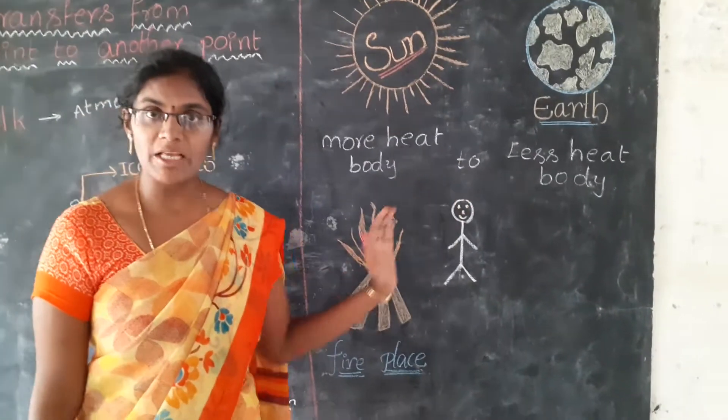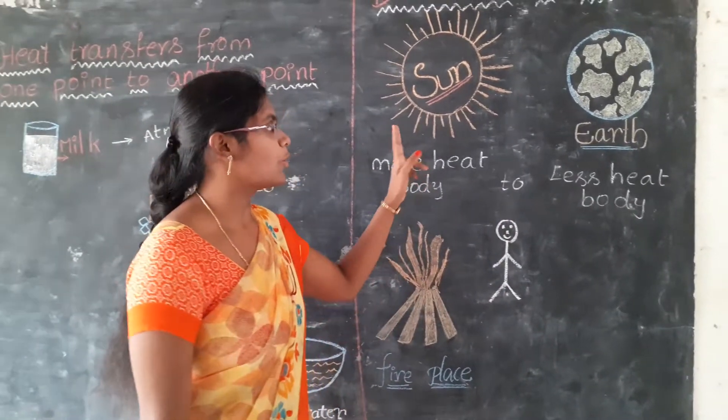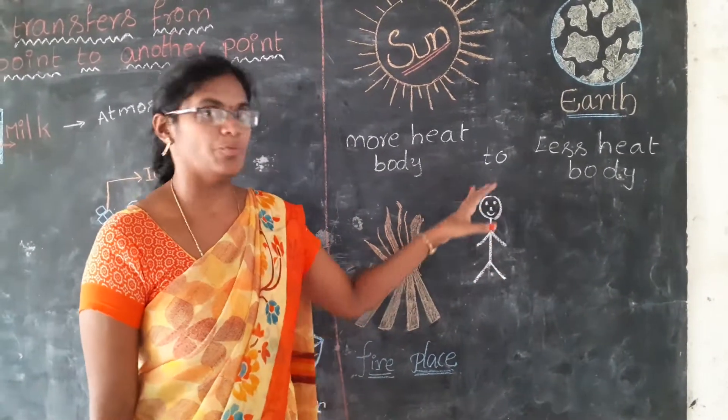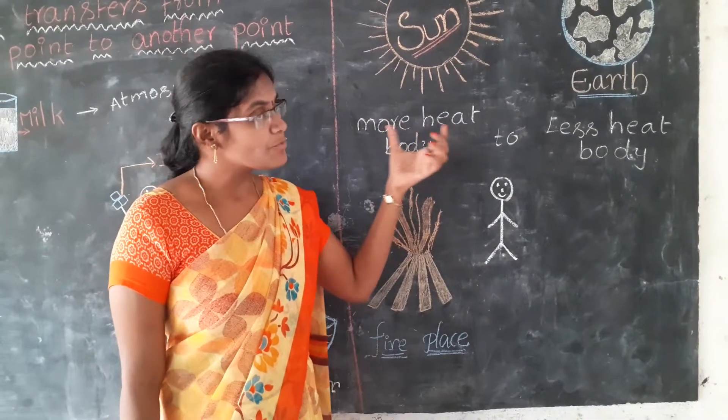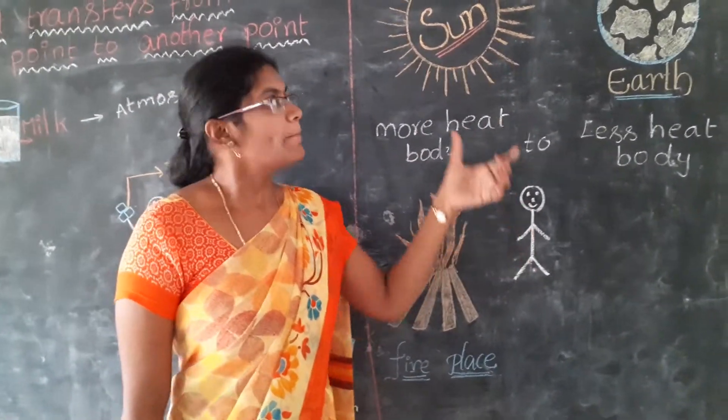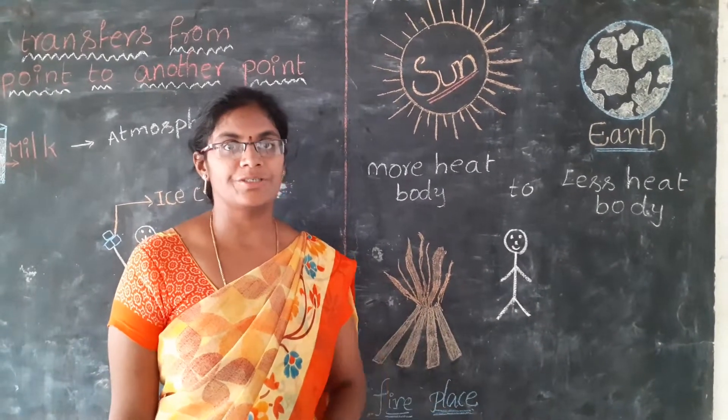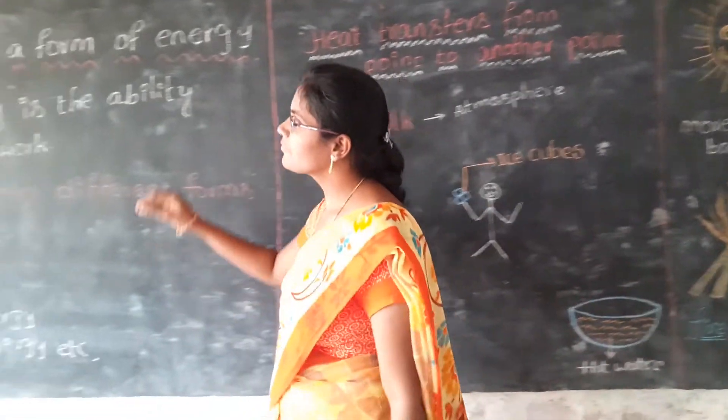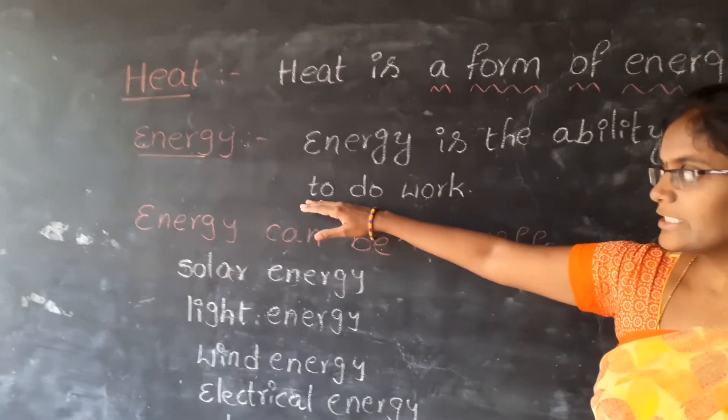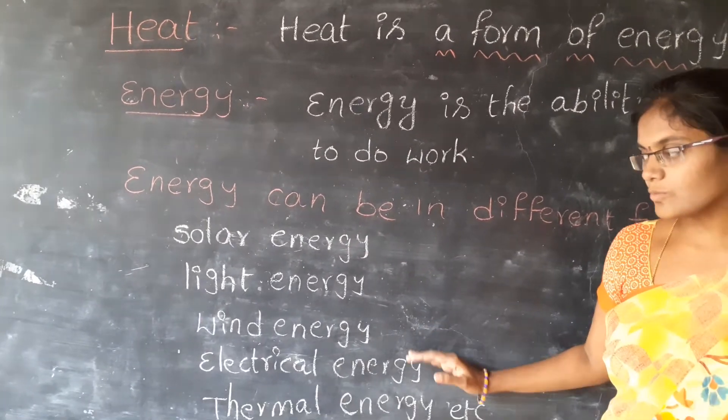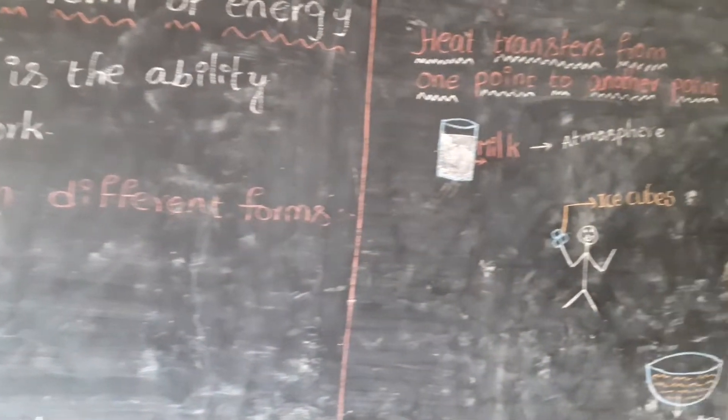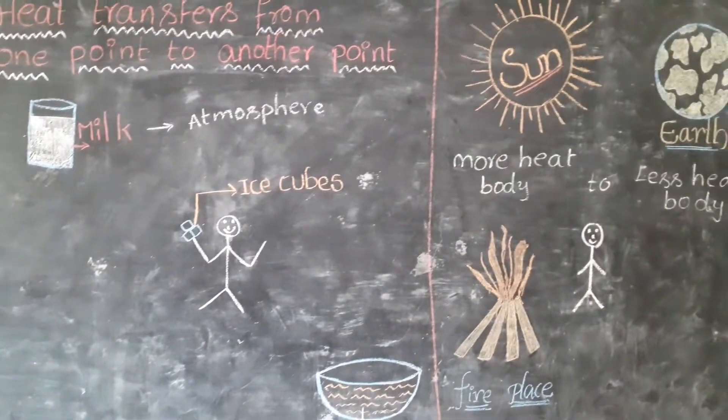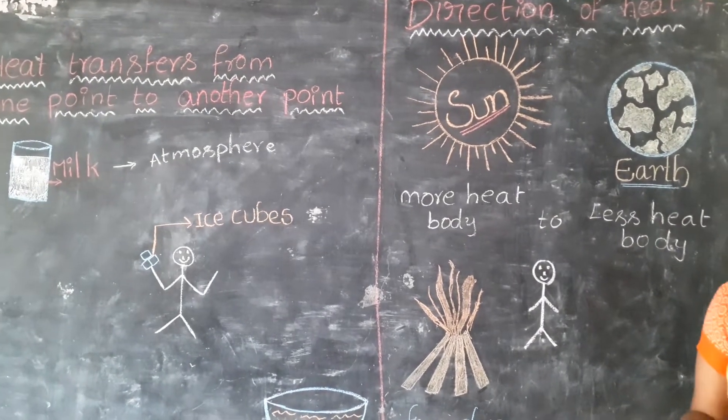This transfer of heat takes place only if two bodies maintain different temperatures. Then only this transfer of heat is possible. And this transfer of heat continues till both the bodies attain the same temperature. So what we discussed till now, see once again: What is heat? What is energy? What are the different forms of energy? Heat transfers from one point to another point. We took a few examples. What is the direction of heat with two examples? And what is the condition for transfer of heat?